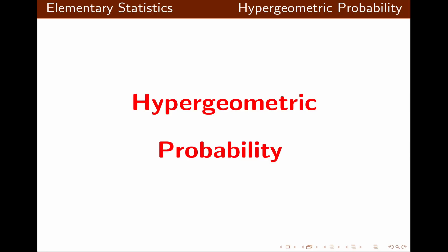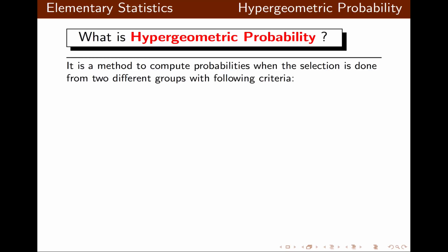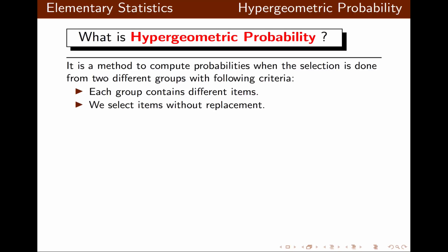In this lecture, we're going to talk about hypergeometric probability. First, let's find out what hypergeometric probability is. It's the method to compute probabilities when selection is done from two different groups with the following conditions: each group contains different items, we select items without replacement, and the order of arrangements does not matter.